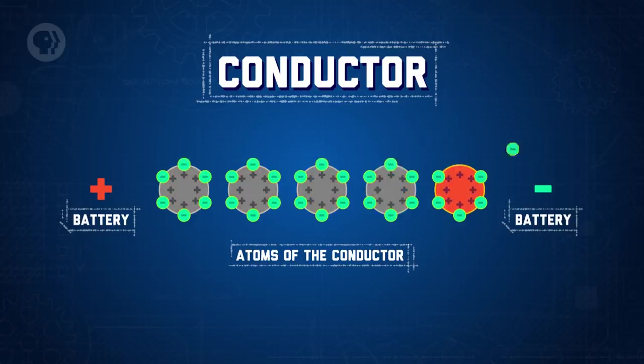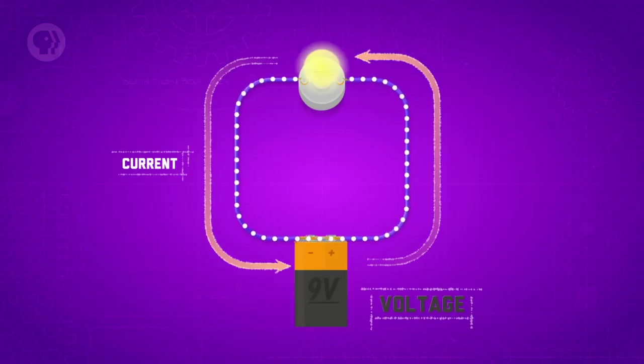Essentially, charge is flowing in the opposite direction to the electrons. For our purposes, we just need to know how easily electrons flow in the material. When they're able to flow in a material with a voltage applied to it – meaning it's connected to something that can generate an electric current, like a battery – we say the material conducts an electrical current.